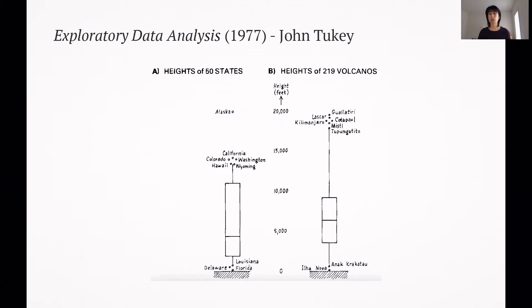Here is one of the earliest examples of a box plot from the textbook Exploratory Data Analysis by Tukey, published in 1977. On the left is a box plot showing the distribution of the highest points of all 50 states; on the right is a box plot of the heights of 219 volcanoes. From this we can see that Alaska is the tallest state while Florida is the shortest, that the middle 25 states range in height from around 2,000 to 11,000 feet, and that there's a wider range in the heights of volcanoes than states. Also worth noting is the hand-drawn nature of these two plots.